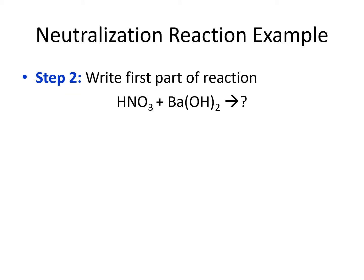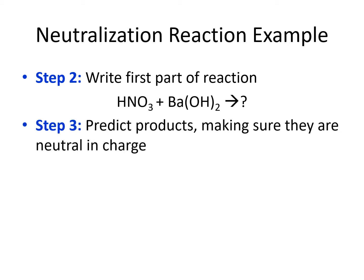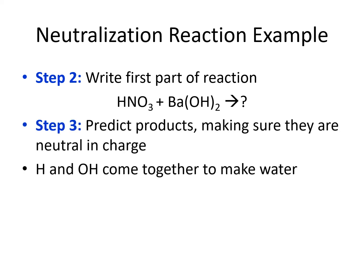So far we've identified our reactants. We can write the first part of the reaction as formulas of the reactants along with an arrow. On the other side of the arrow, we're predicting our products, and we have to make sure they're neutral in charge. The H and the OH are coming together to make water — don't worry about the fact that there are two hydroxides in barium hydroxide; we'll balance that out later. We just need to predict what types of ions are coming together to make what type of product.